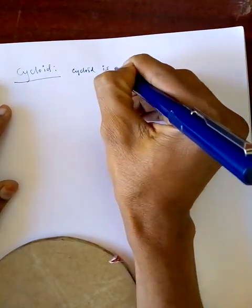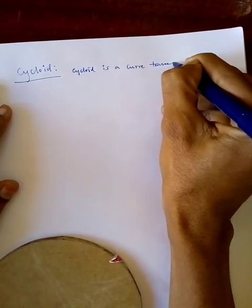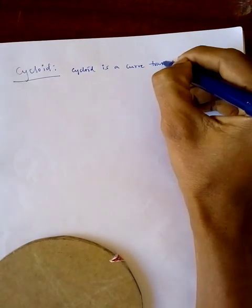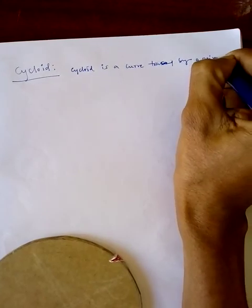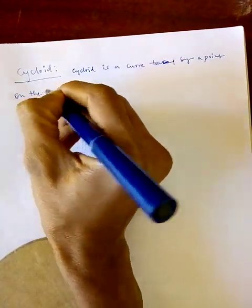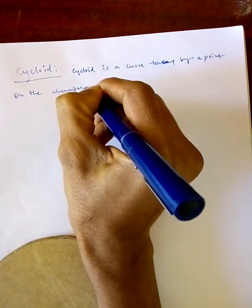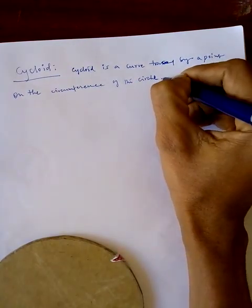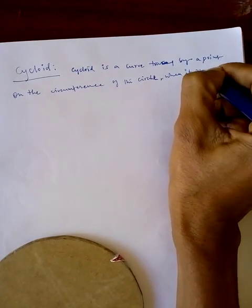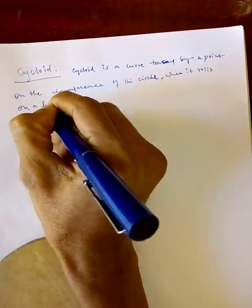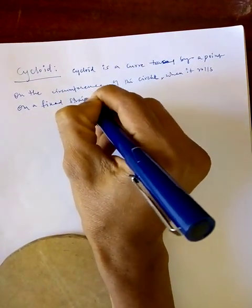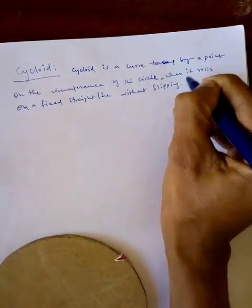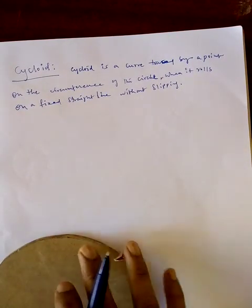A cycloid is a curve traced by a point on the circumference of a circle when it rolls on a fixed straight line without slipping. This is called a cycloid.